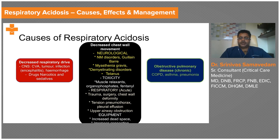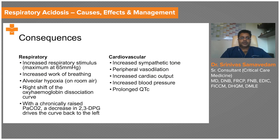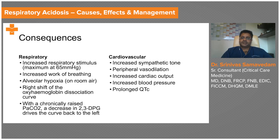COPD is well known to produce increased carbon dioxide retention. Just as metabolic acidosis triggers respiratory compensation, a respiratory disease triggers metabolic compensation. However, when CO2 goes up, the first response is still from the respiratory system — there is an increased respiratory stimulus, which is maximal at 65 mmHg of carbon dioxide, increasing the work of breathing.